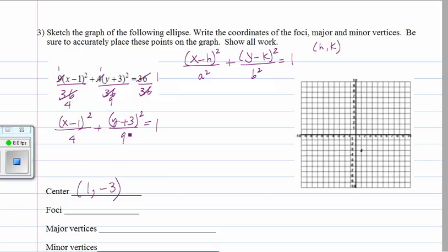Our a squared is 9, so that makes a plus or minus 3. A squared is always the bigger of the two numbers that are in the denominator here. And our b squared is 4, so b is plus or minus 2.